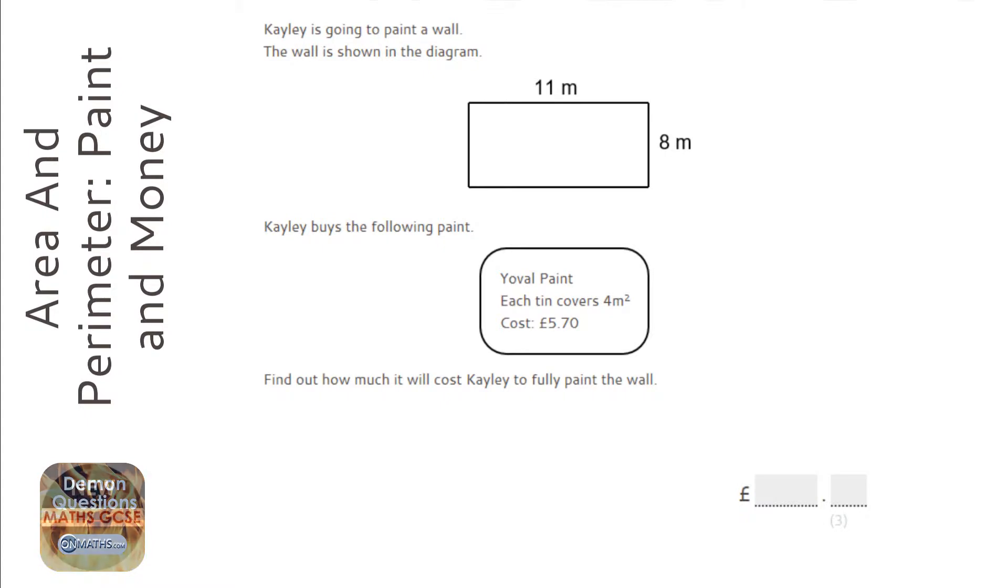So, the first thing to do with this question is work out the area of the wall. I'm just going to show the examiner that I'm doing the area. And I'm going to do the width times the height. So, it's 88 metres squared.